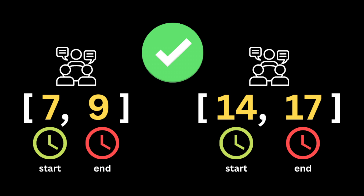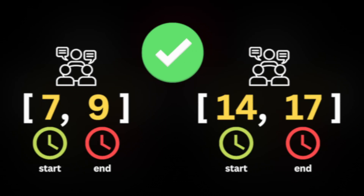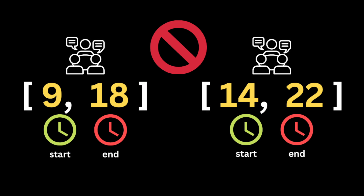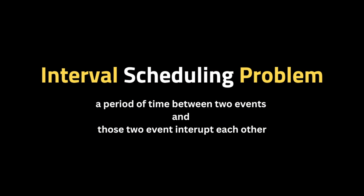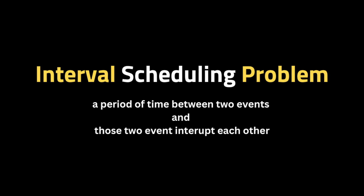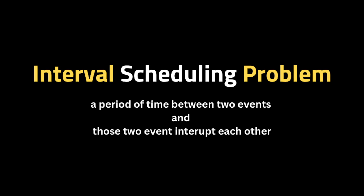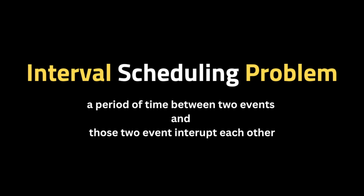For example, one meeting starts at 7am and ends at 7am, and the second meeting starts at 2pm and ends at 5pm — so in this example the person can attend both meetings. But if the first meeting starts at 9am and ends at 6pm, and the second meeting starts at 2pm and ends at 10pm, the person cannot attend both. This is referred to as an interval scheduling problem, where two events interrupt each other.